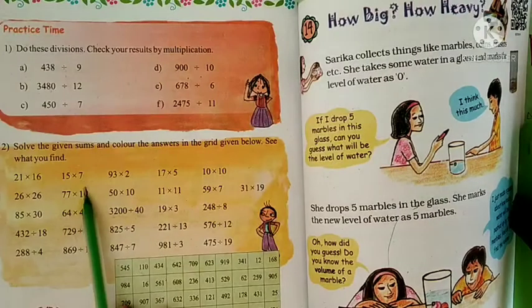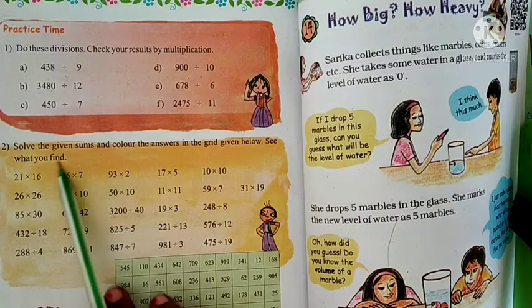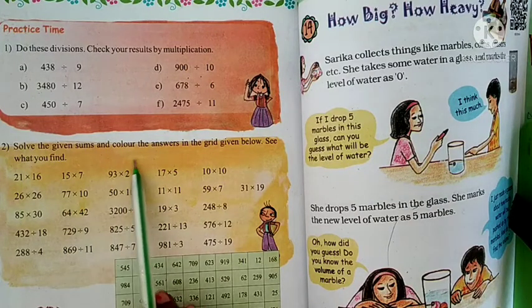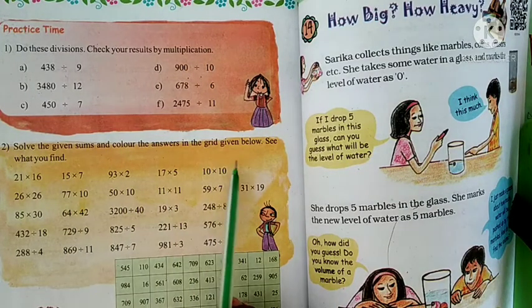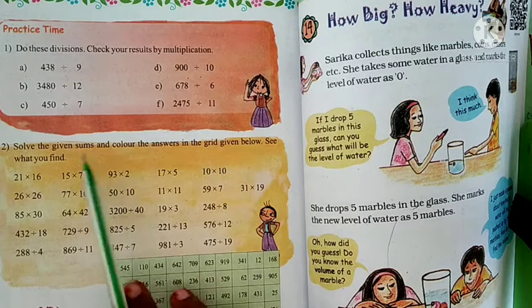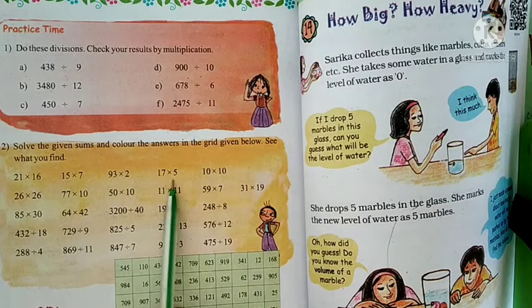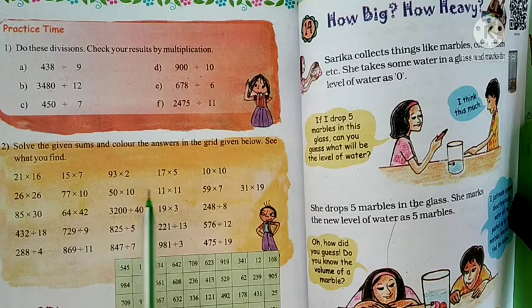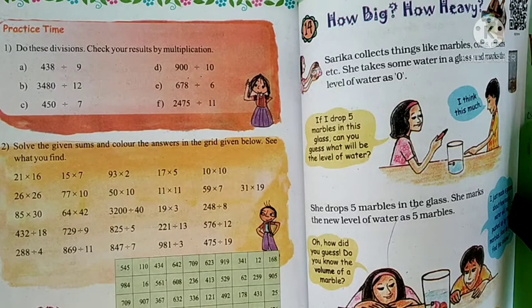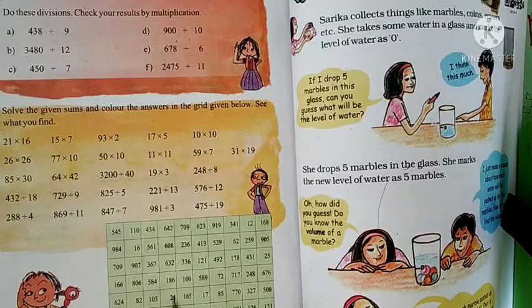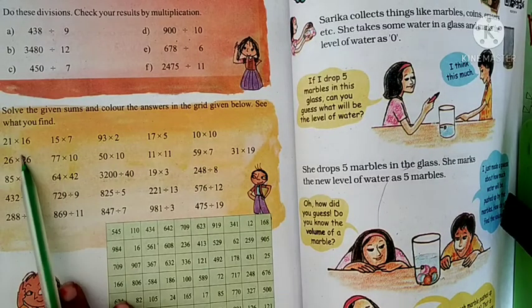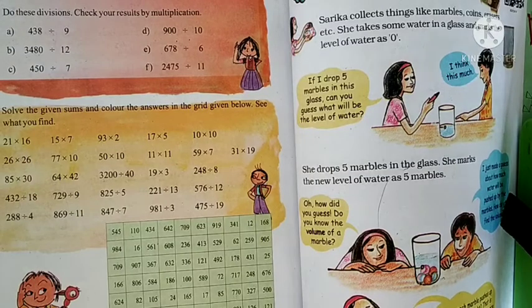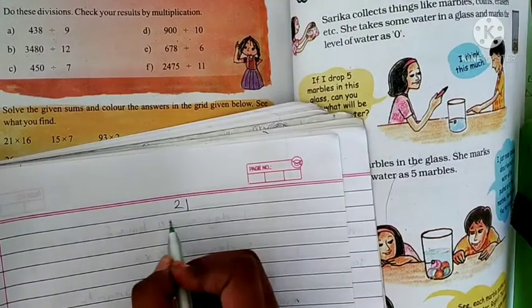What is it? Next is our topic. Solve the given sum and color the answer in the grid given below. See what you find.